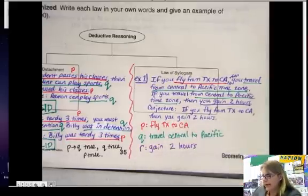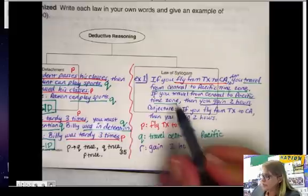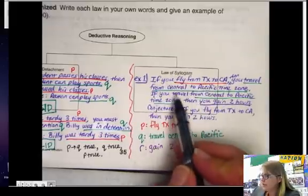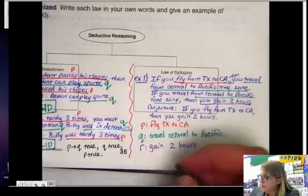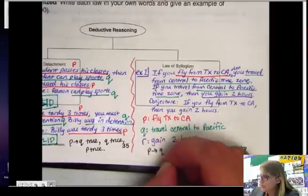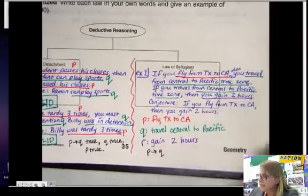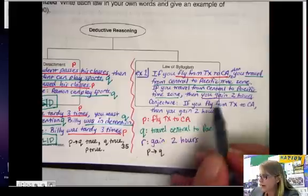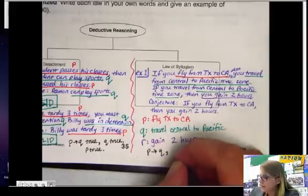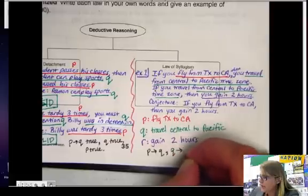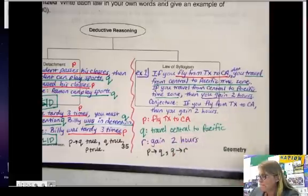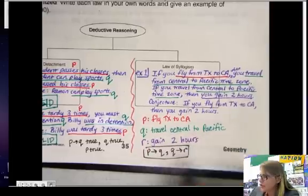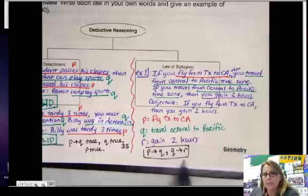So let's analyze this a little bit. The first sentence: if you travel from Texas to California, then you travel from central to Pacific, so that one is P arrow Q. So far so good. The second sentence: if you travel from central to Pacific, then you gain two hours, is starting at Q again, arrow in our new one, R.